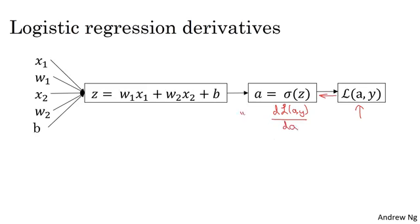In the code, you just use dA to denote this variable. If you are familiar with calculus, you could show that this ends up being -y/a + (1-y)/(1-a). The way you do that is you take the formula for the loss, and if you're familiar with calculus, you can compute the derivative with respect to the variable a and you get this formula. But if you're not familiar with calculus, don't worry about it. We'll provide the derivative formulas you need throughout this course.